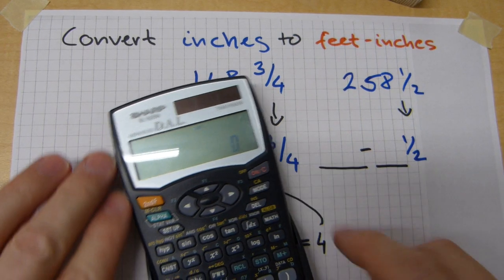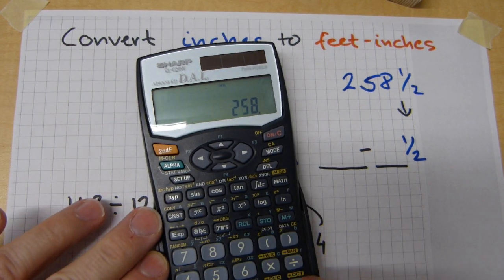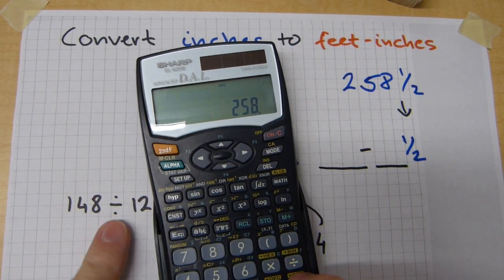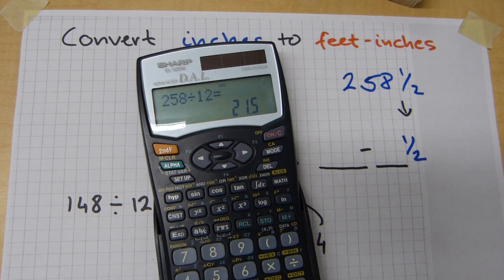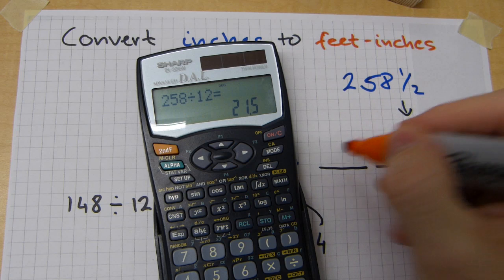On a calculator, enter 258. Divide this by 12. 12. 21.5. Write down 21 here.